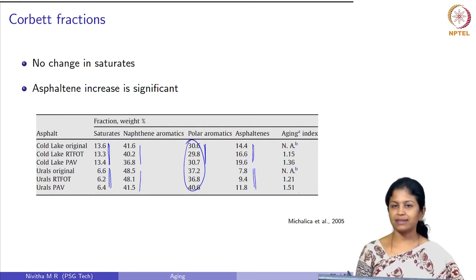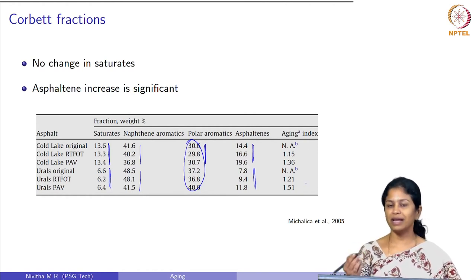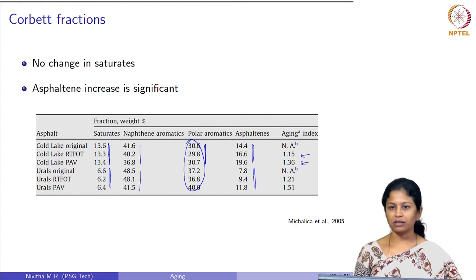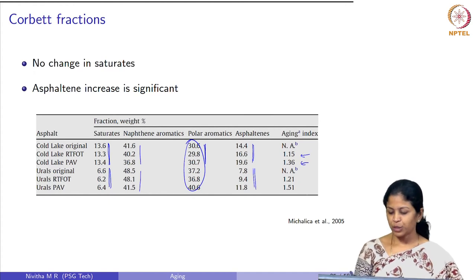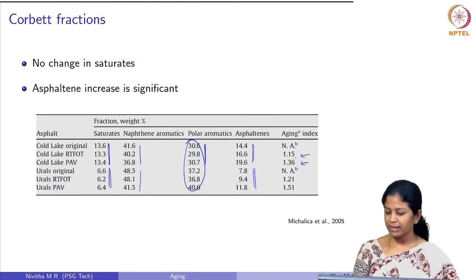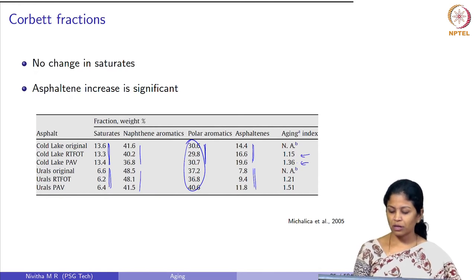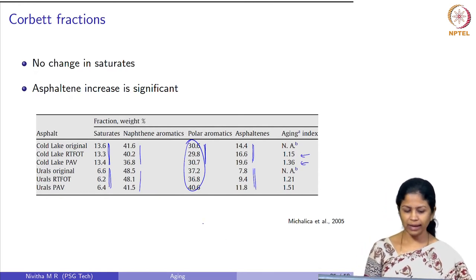There is a significant increase in the asphaltene fraction in both types of bitumen. The aging index, as defined earlier as the ratio of aged to unaged viscosity, shows a small increment in short-term aging and also an increment in long-term aging.